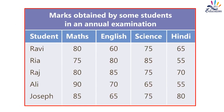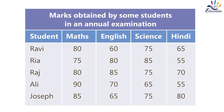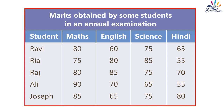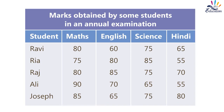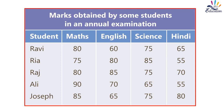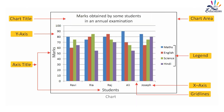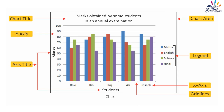The example table shows marks obtained by students in an annual examination. Student Ravi scored Maths 80, English 60, Science 75, Hindi 65. Rhea scored Maths 75, English 80, Science 85, Hindi 55. Raj scored Maths 80, English 85, Science 75, Hindi 70. Ali scored English 70, Science 65, Hindi 55. Joseph scored Maths 85, English 65, Science 75, Hindi 80. The chart diagram labels the chart title, y-axis, axis title, chart area, x-axis, and gridlines.